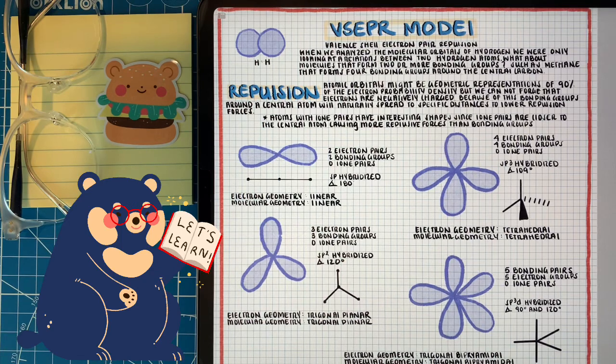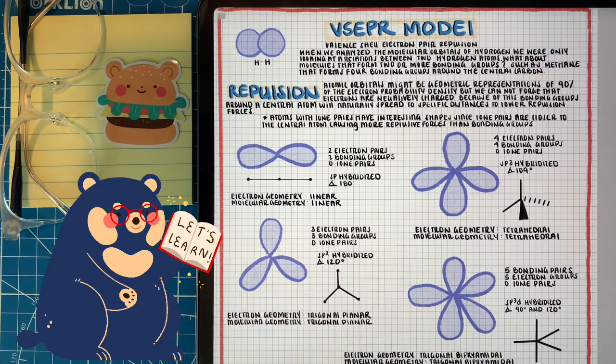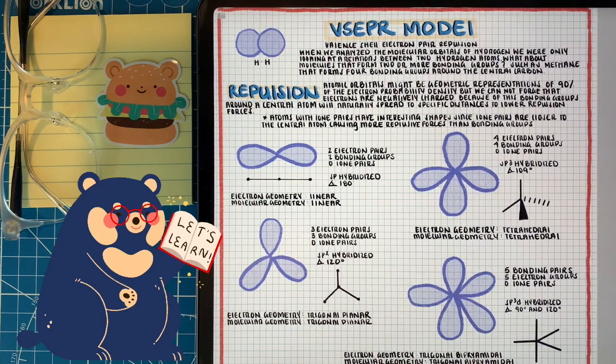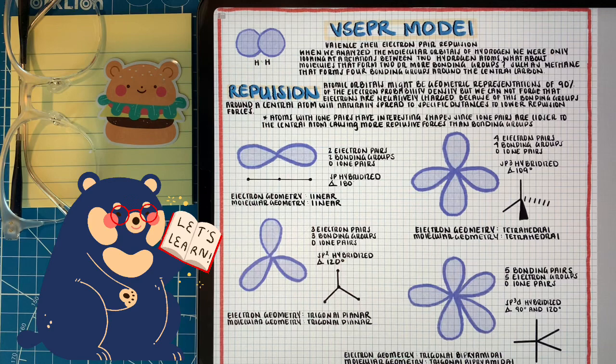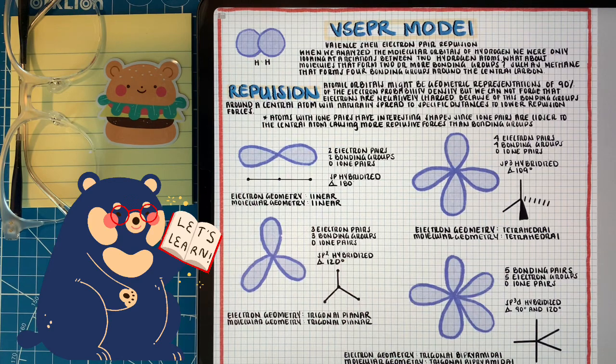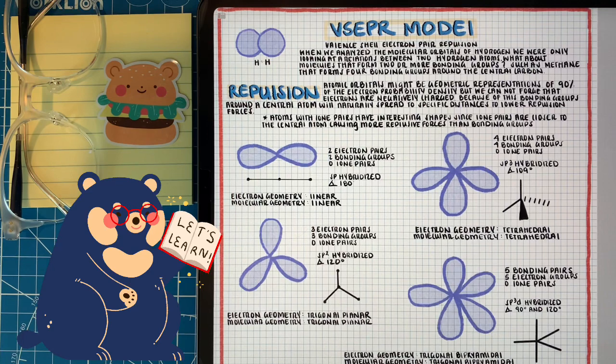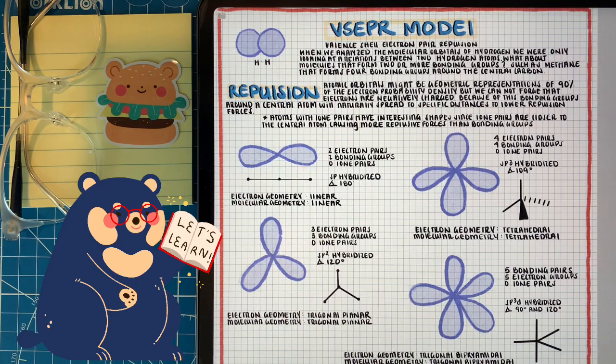This is where we're introduced to the VSEPR model, the valence shell electron pair repulsion model. More or less, what the valence shell is, is the highest energy atomic orbitals of a specific atom. So that usually results in the highest principal quantum number that atom has. So the VSEPR model talks about how a central atom will rearrange its bonding groups to minimize repulsion and energy.